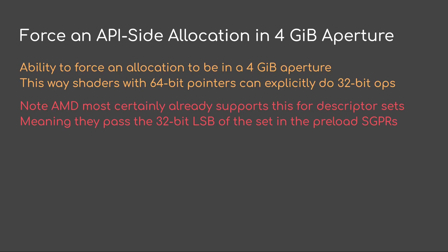Another big thing we need on the API side is to be able to force an allocation in a four-gigabyte aperture. This way, if you need to do 64-bit pointers, you can just explicitly modify the 32-bit bottom part. Note that AMD most certainly already supports this for descriptor sets, meaning they pass the 32-bit least significant bits of the set pointer in the preloaded SGPRs to save on space.